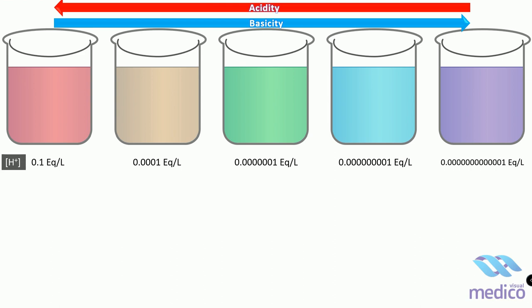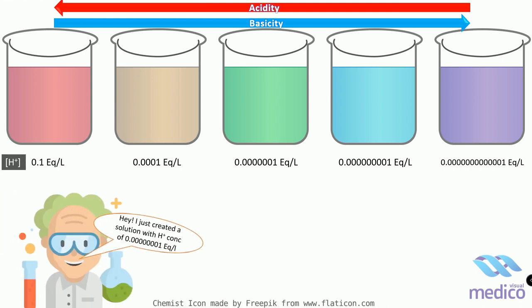Now this way of representing the strength of an acid or base in terms of hydrogen ion concentration isn't an efficient method because it involves lots of zeros after the point. So imagine your friend in the laboratory saying that hey, I just created a solution with hydrogen ion concentration of 0.00001 equivalent per liter. I hate mentioning these lots of zeros, even I forgot the actual number of zeros involved in this. So there must be some solution to this problem.